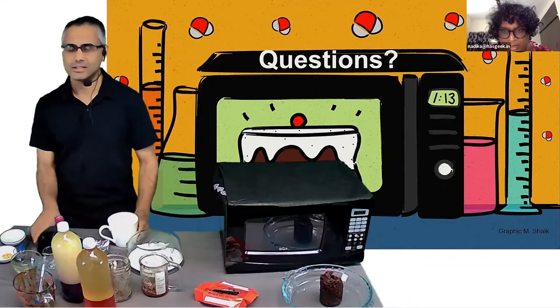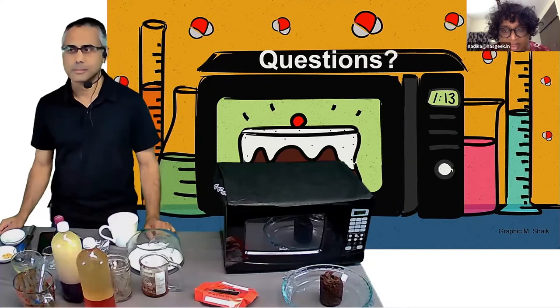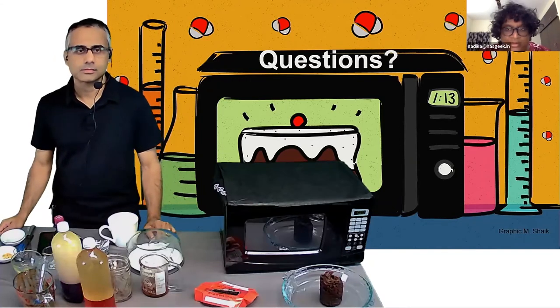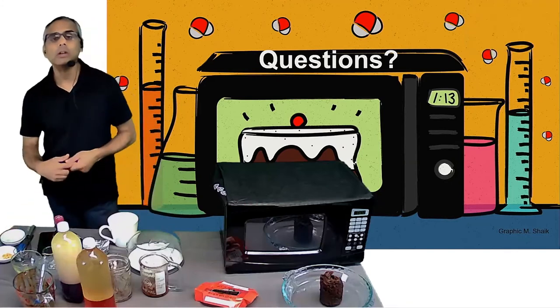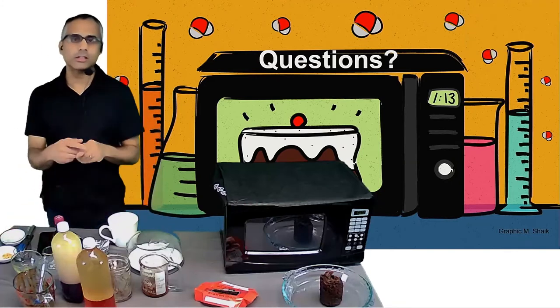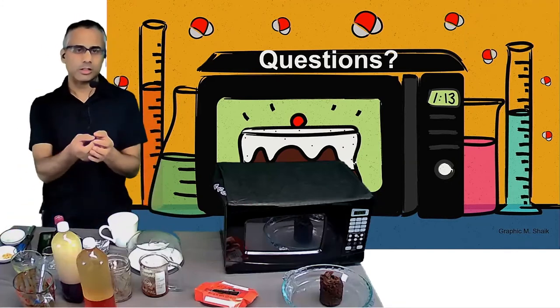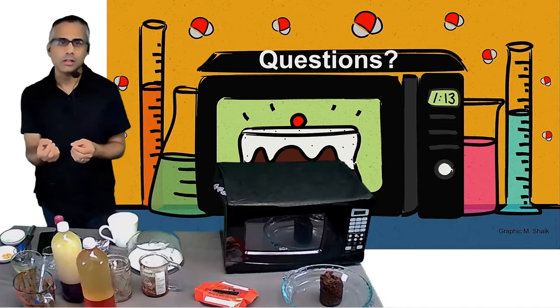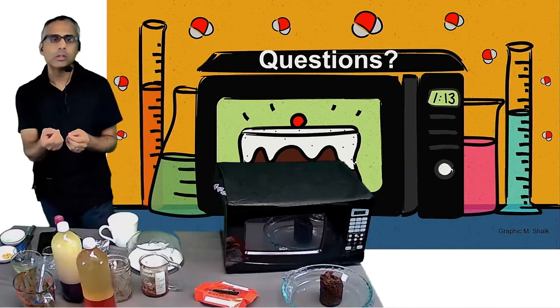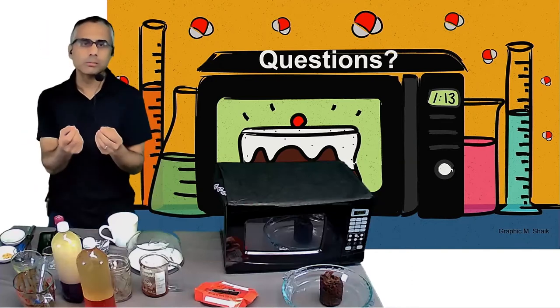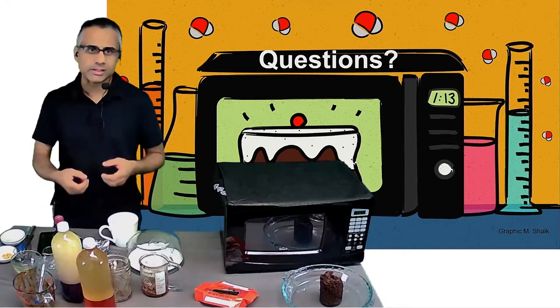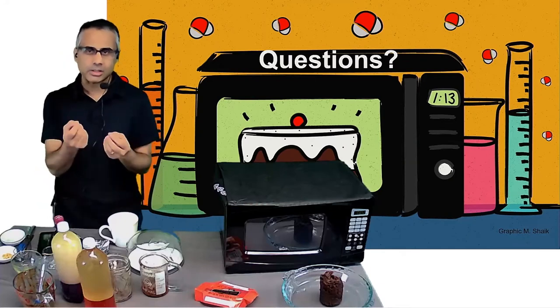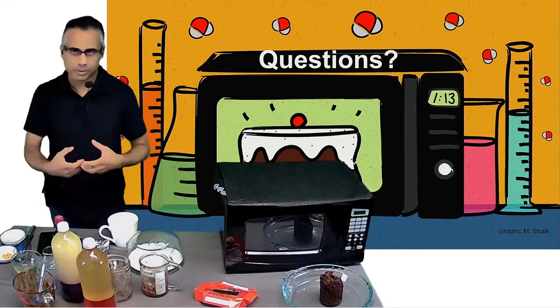Nikhil Perera asks: how does popcorn work in the microwave? Popcorn is interesting — it's a dried corn kernel. There are some polar molecules in there along with a small amount of moisture, and that's essentially what gets heated and leads to the whole kernel puffing and expanding.